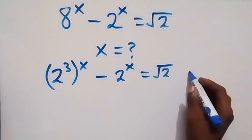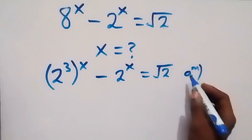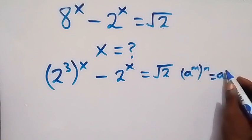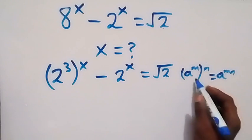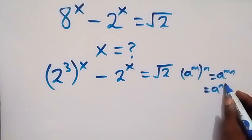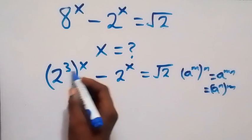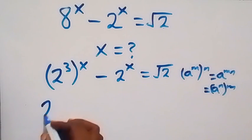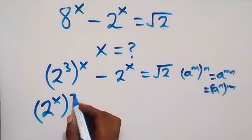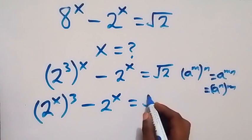From the law of indices, we have a raised to power m, then raised to power n. This is the same thing as a raised to power mn. This power multiplies, and we can also write it as a raised to power n, then raised to power m. So here we can interchange this, and this will be 2 raised to power x, then raised to power 3, minus 2 raised to power x equals to root 2.